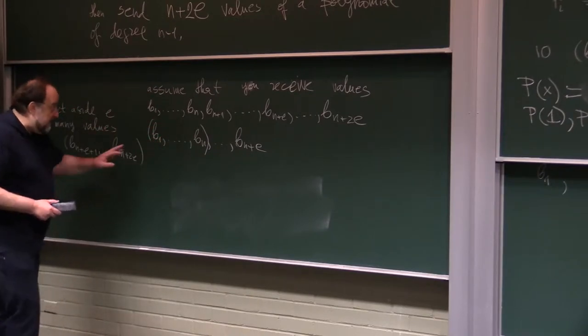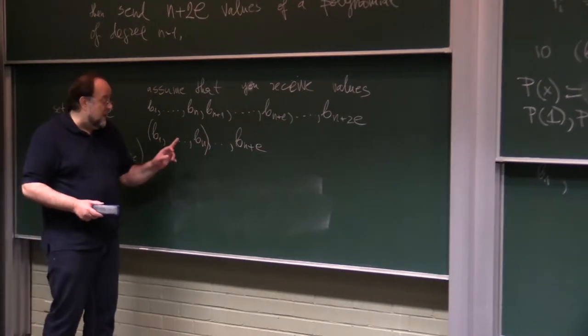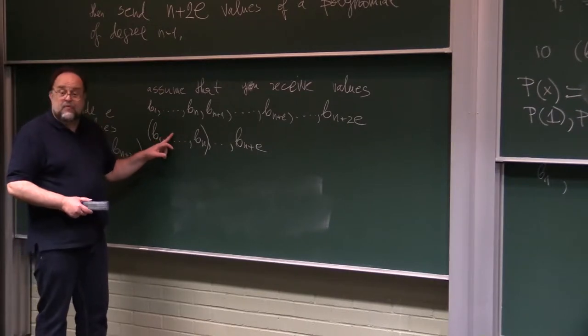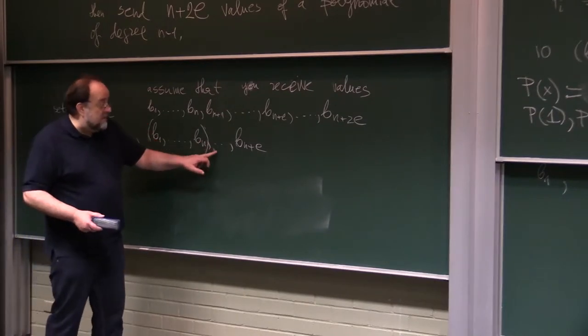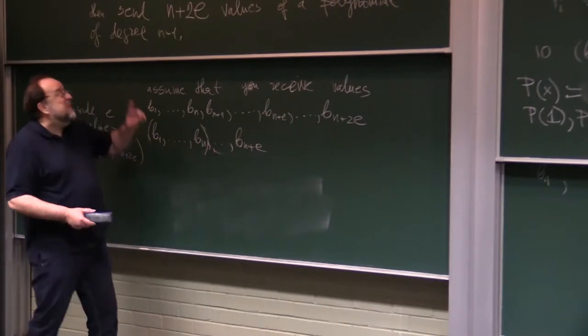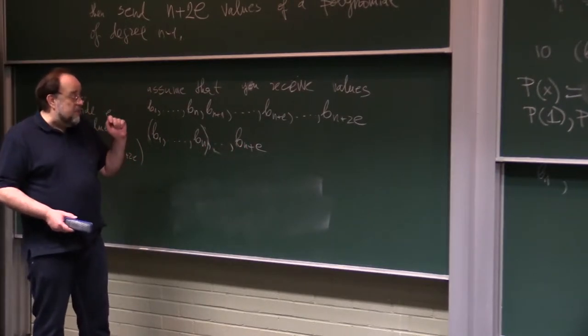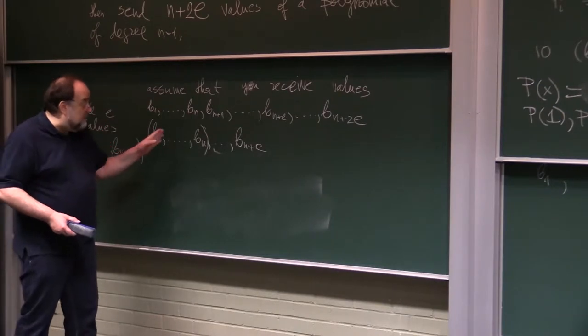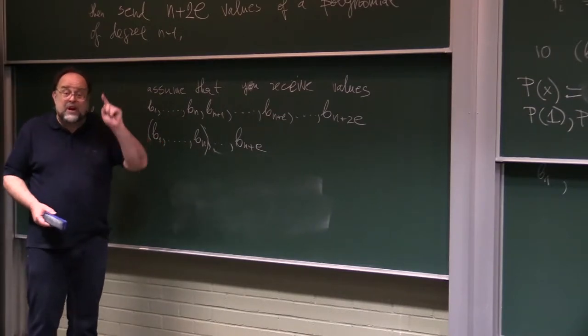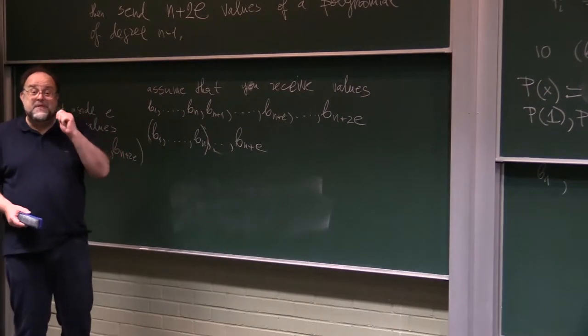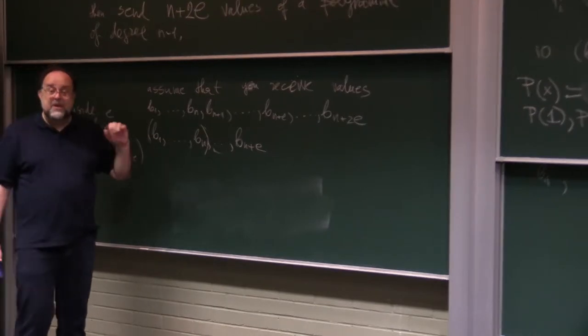The trick here was, even if e many values here that you are building polynomial from are wrong, the only way that these polynomials will fit these values is if it's only p. Because since you have n plus e values, and e of them can be wrong, when I put my polynomial to these guys, if they do lie on the same polynomial, because n values will be correct, the only polynomial that can fit them is p. Right? Because n values uniquely determine a polynomial of degree n minus 1.